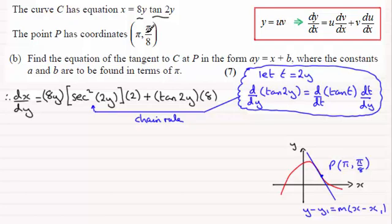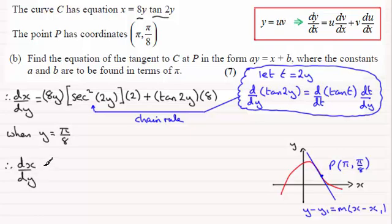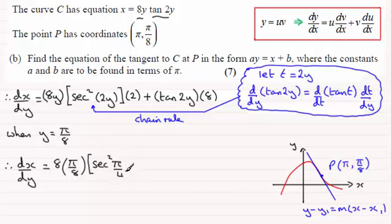Now we need to find what dx/dy is when y equals π/8, and then we can get dy/dx. So when y equals π/8, dx/dy equals: 8 times y — that's 8 times π/8 — times sec²(2y) — that's sec²(2 times π/8) which is sec²(π/4) — multiplied by 2. Then plus 8 times tan(2y), which is tan(2 times π/8), so tan(π/4).